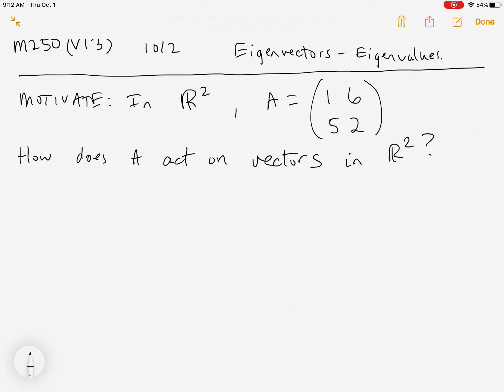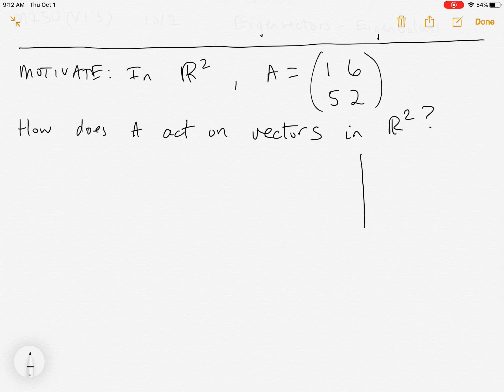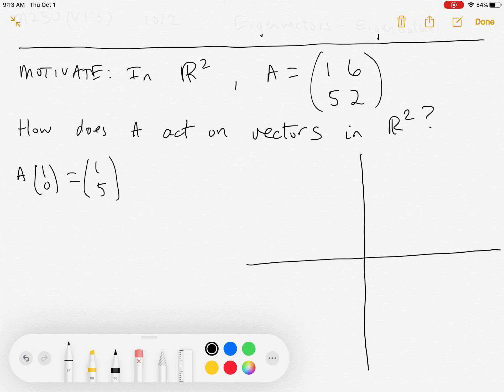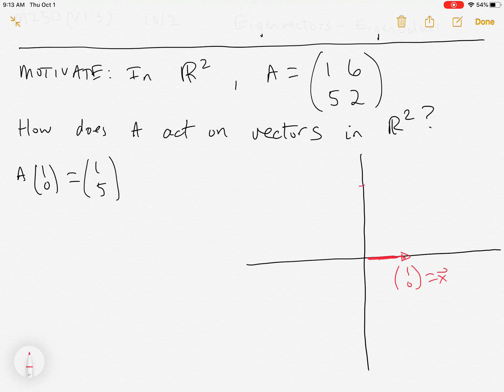And it's this action that leads us to a special case of eigenvectors. So let's make some axes over here. Let's just see, what does A do to the vector (1, 0)? And A(1, 0) turns out to be (1, 5). So in this picture, if I have the vector (1, 0) here, and this is x, then A of x is (1, 5).